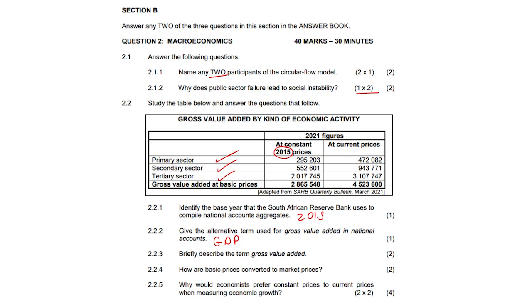2.2.3: Briefly describe the term gross value added. This is the value that is added to goods at every stage of the production process. The answer is almost in the name.